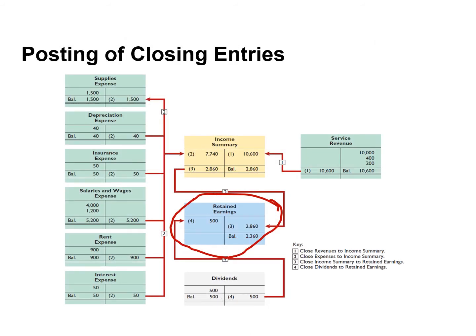This slide illustrates the closing entries. After you post these entries, the balance in retained earnings agrees with the retained earnings statement. After posting all closing entries, the balance in retained earnings is $2,360, which agrees with the amount reported on the retained earnings statement.